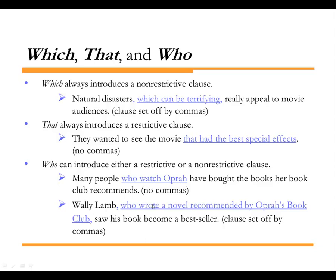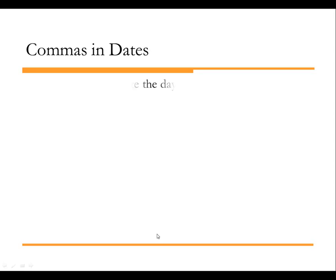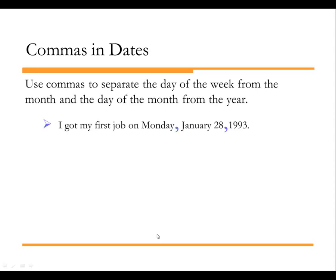You already know about commas in compound and complex sentences. In a compound sentence, two sentences are joined by a comma and a fanboy (coordinating conjunction). In a complex sentence, if your dependent clause comes first, you put a comma before your independent clause.